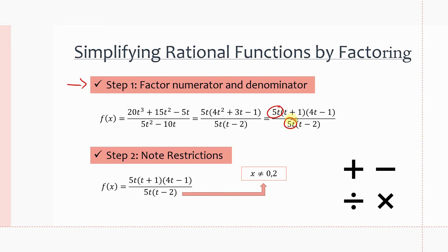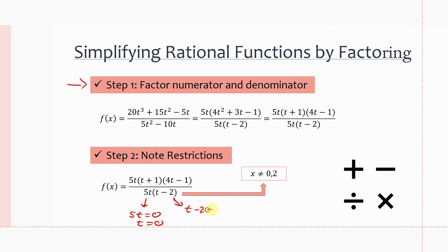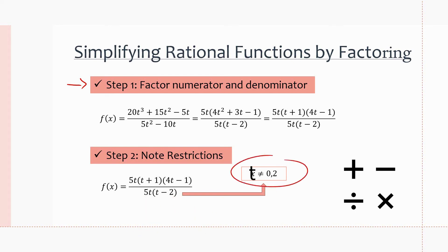Step 2: before cancelling any common factors, we want to find the restrictions first. If we cancel the 5t before noting restrictions, we lose sight of the fact that t = 0 makes the original denominator zero and is undefined. So from the denominator, setting 5t = 0 gives t = 0, and setting t − 2 = 0 gives t = 2. These are restrictions — t cannot equal 0 or 2.